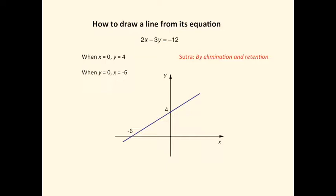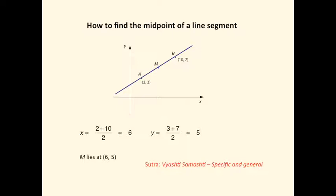Next we deal with how to find a line segment midpoint. Here is an example: we have two points, A at (2,3) and B at (10,7), and we need to find the coordinates of the midpoint. This is done just by averaging the x coordinates and averaging the y coordinates.